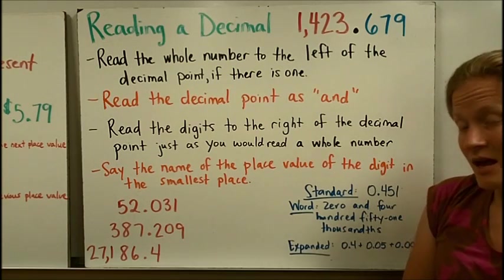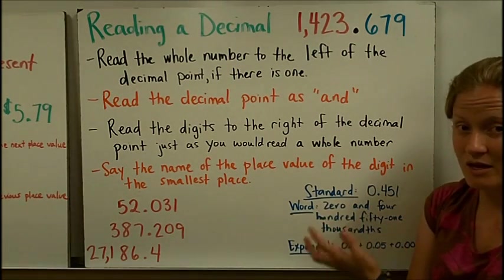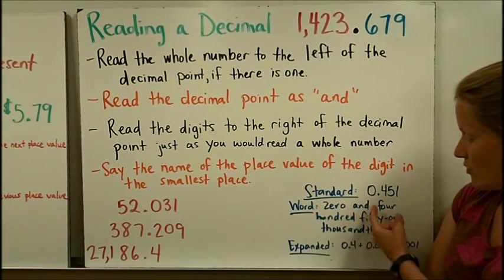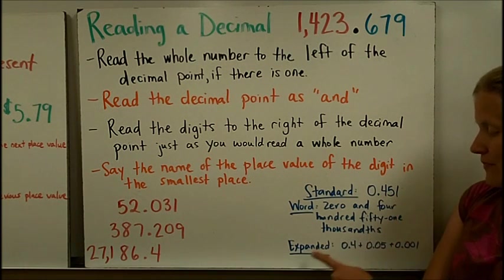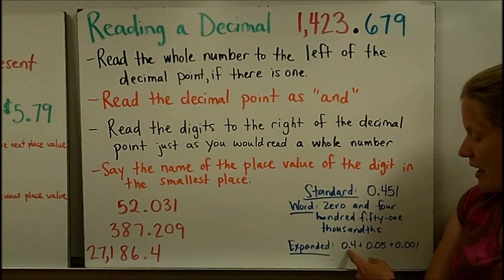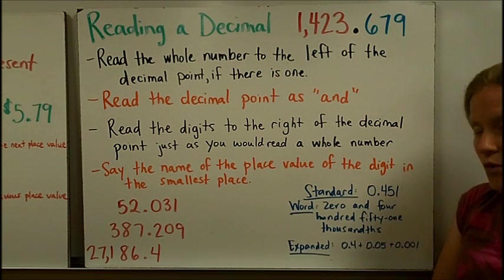And finally, just like you can with whole numbers, we need to realize that we can write a decimal number in different forms. Standard form is just the number form. Word form here, zero and four hundred fifty-one thousandths. And then we could also write it in the expanded form by writing an addition problem, adding the value of that four plus the value of the five plus the value of the one.